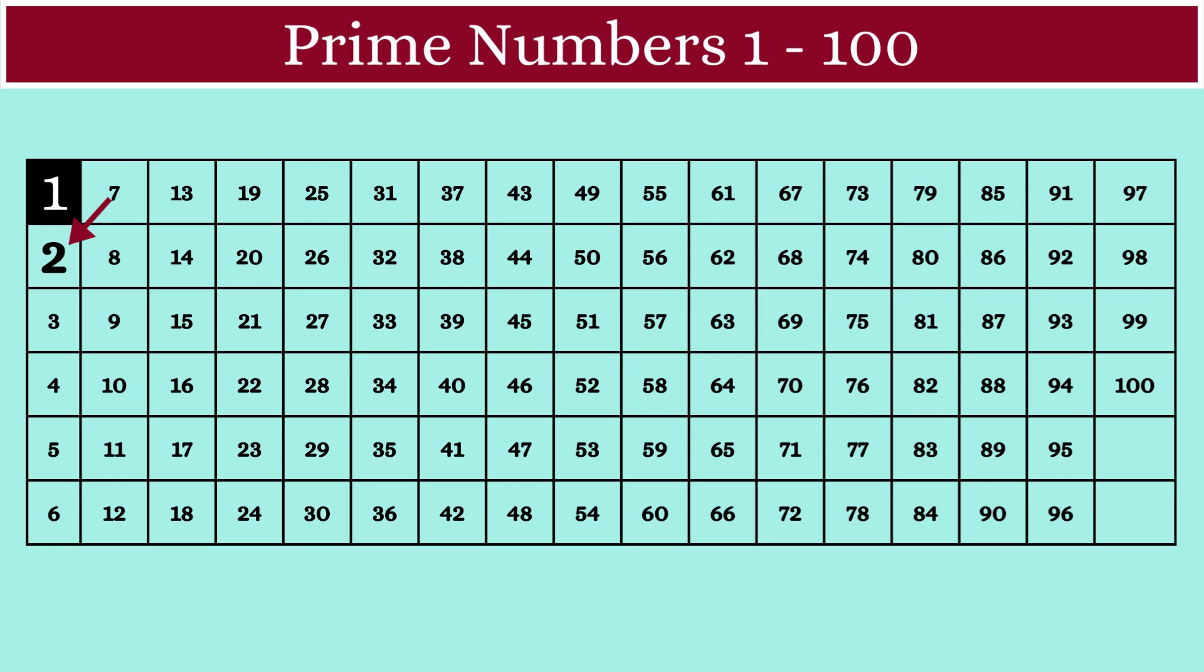2 is a prime number. It has only two factors, 1 and 2. So, we'll mark 2 as a prime number and then we'll mark all the multiples of 2 in a different color to show that they are all composite numbers.